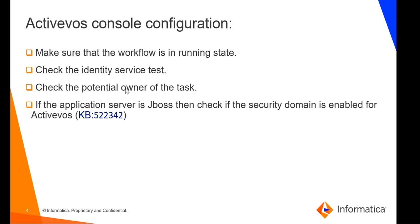The second point: we need to make sure that the identity service test is passing for the admin user. Third, we need to check the potential owner of the task. The fourth point is only applicable for the JBoss application server — I have mentioned a particular KB article you can go through. It explains how to enable the security domain for ActiveOS in the standalone-full.xml. If we don't have the security domain enabled for ActiveOS, then the task would not be available in the E360 screen.